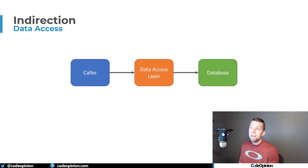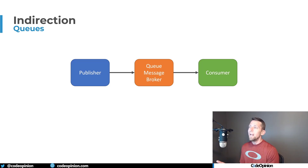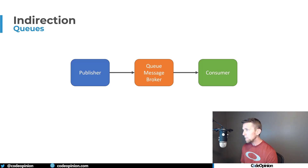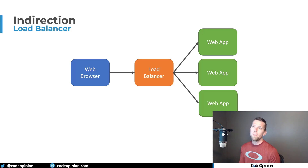There are other examples outside of code too. If you're using a message broker or queues, you're sending messages or events to a broker or queue, and then a consumer picks those up. This is indirection because the publisher and consumer are working at different paces. Another example is a load balancer, which enables horizontal scaling — your browser doesn't interact directly with your web application, but hits a load balancer that routes to the appropriate available web app.